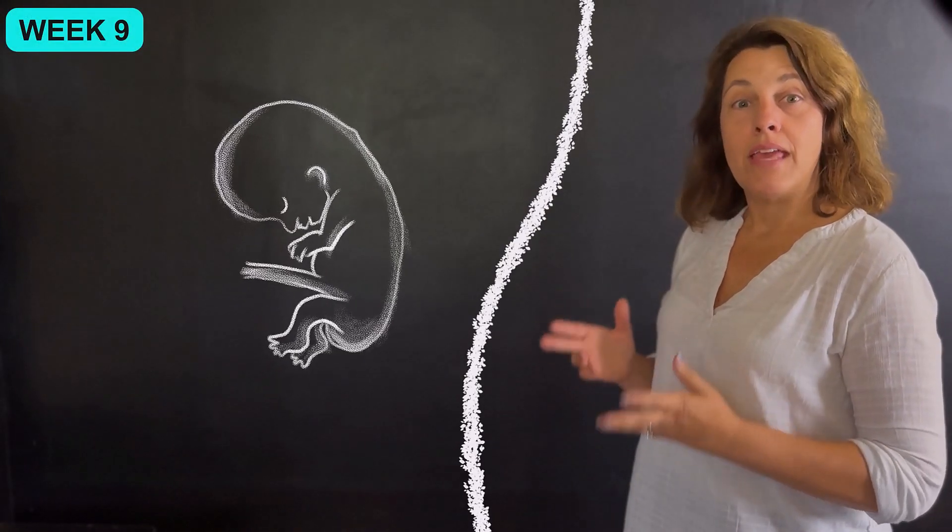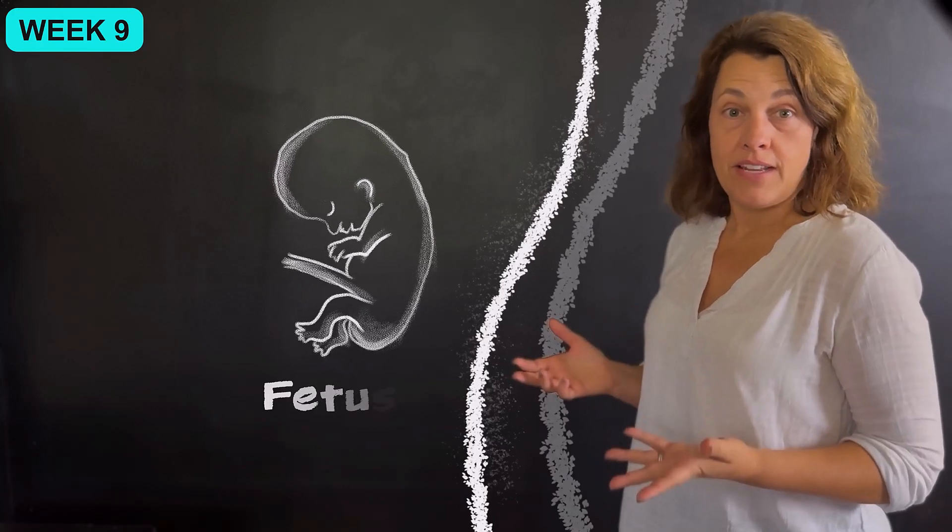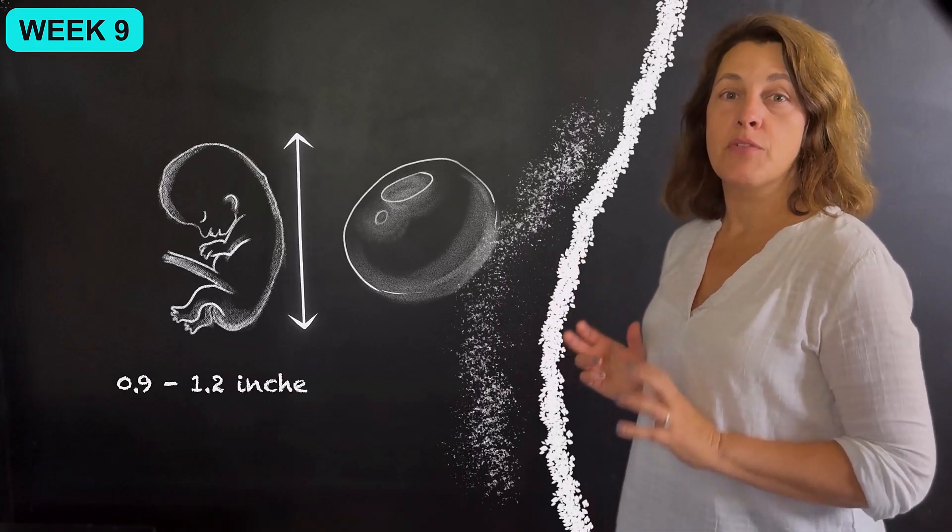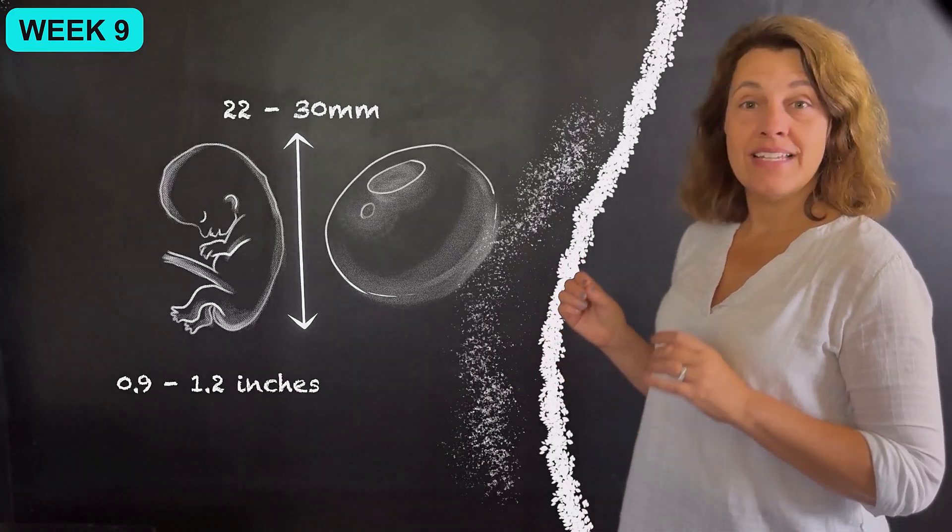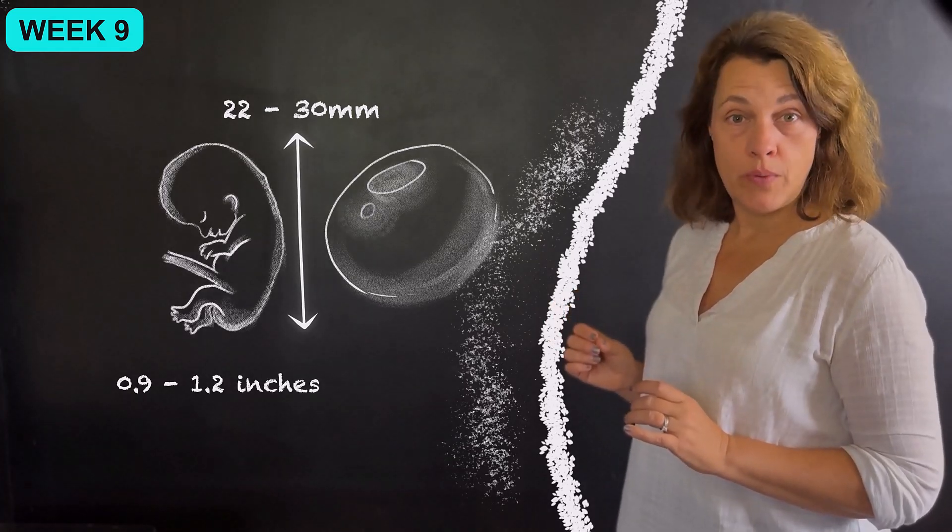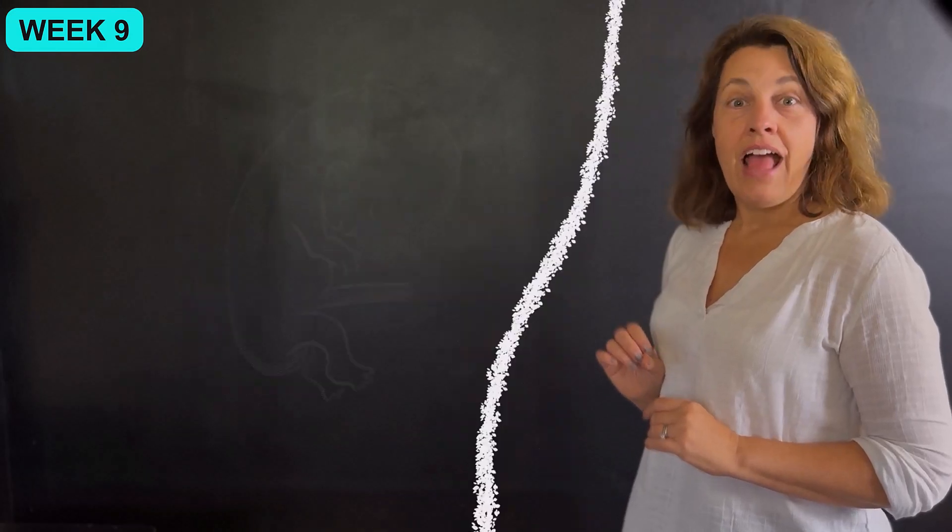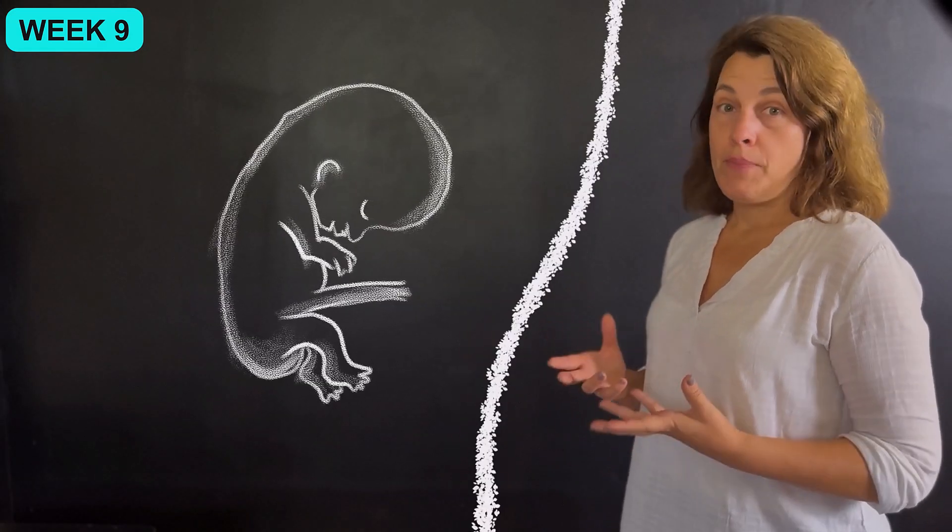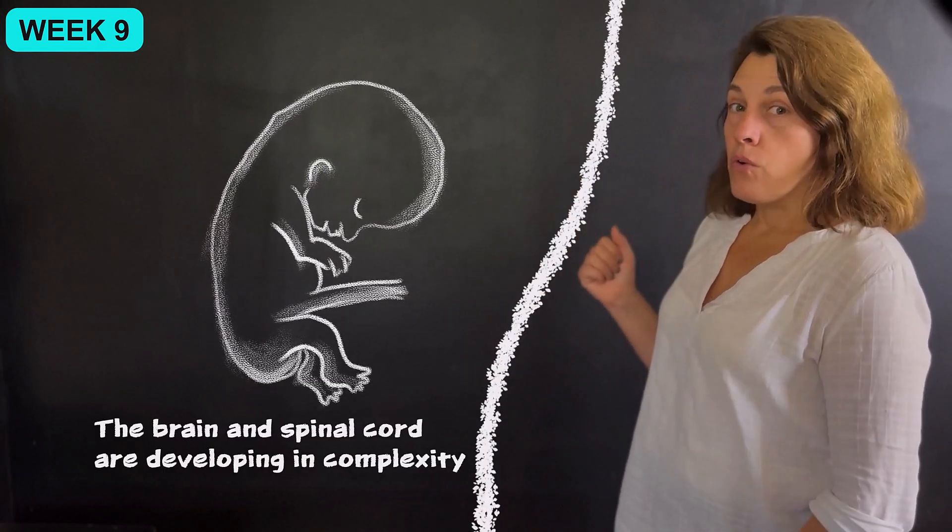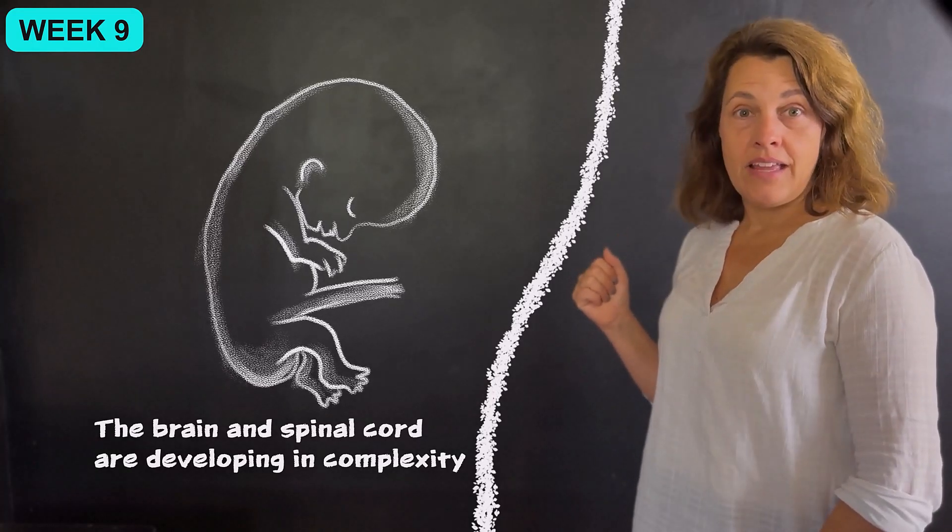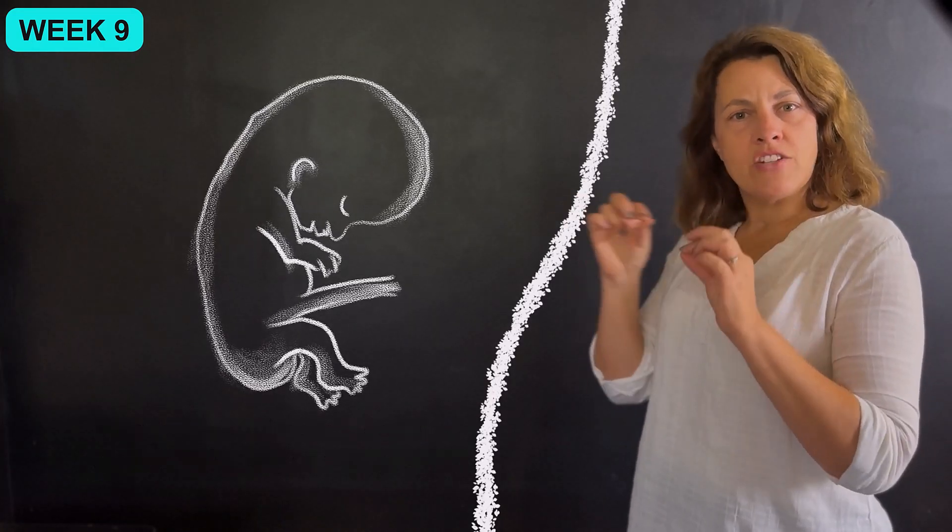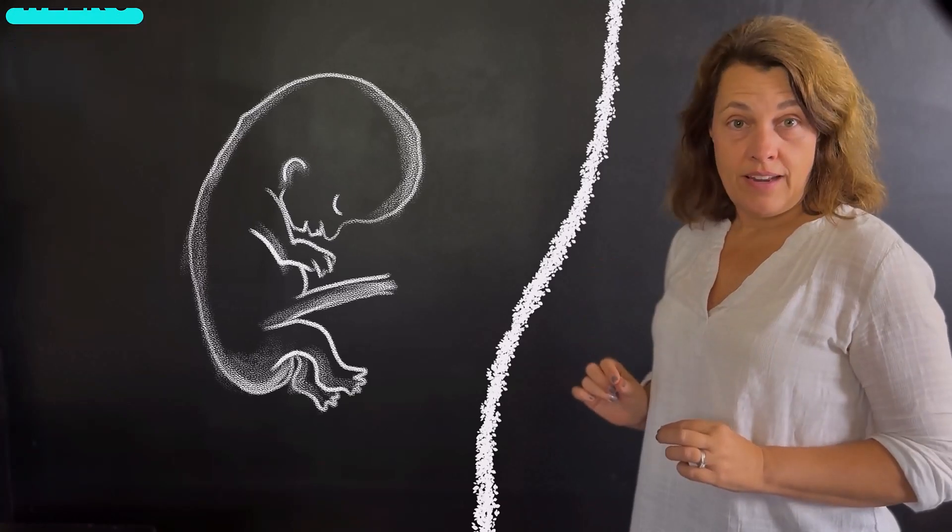At nine weeks of pregnancy, the embryo is now considered a fetus and is about the size of a grape, measuring 0.9 to 1.2 inches or 22 to 30 millimeters in length. The embryo continues to grow at a rapid pace. The brain and spinal cord are developing in complexity and the neurons and connections between the nerve cells are strengthening.